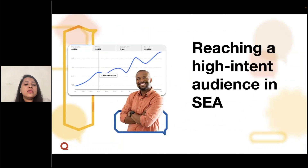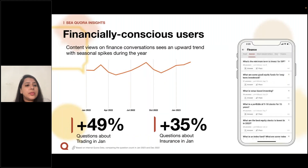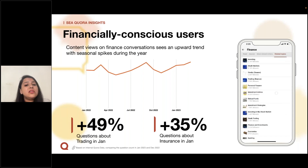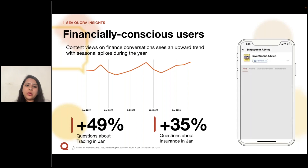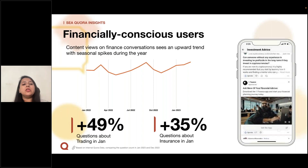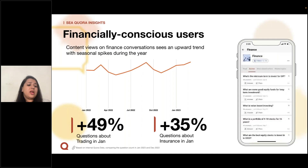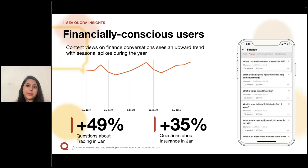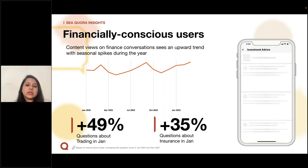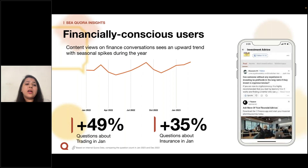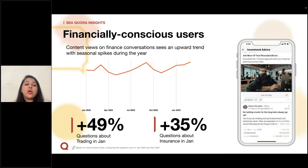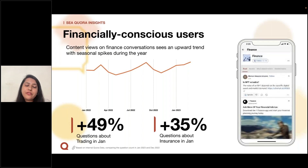Let us understand the high intent audience in Southeast Asia and globally through a couple of vertical insights. The first vertical is finance. Finance is a strong engaging topic on Quora with constant engagement month on month. We see a rise in question views around trading and insurance. Overall, this is one of the most popular and steady verticals, covering topics from personal savings to investments and insurance.